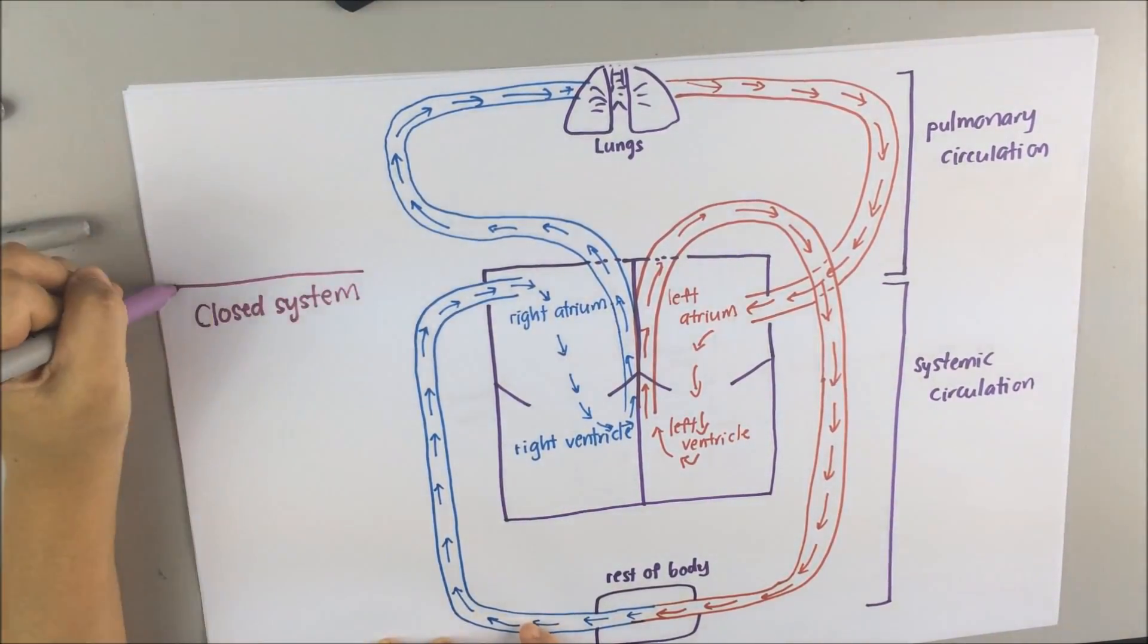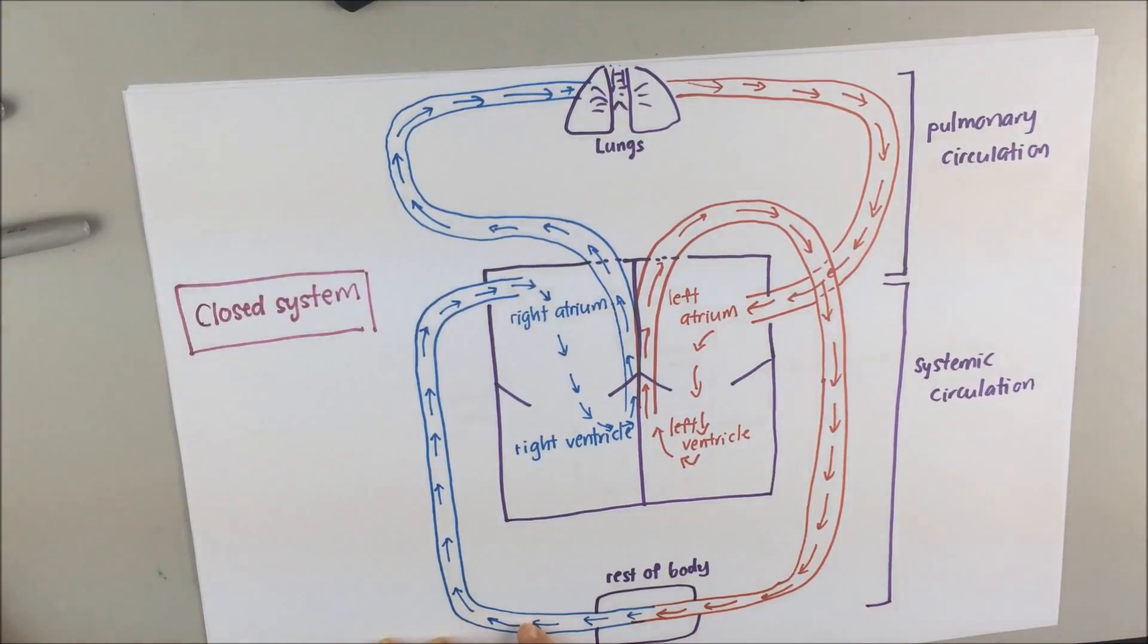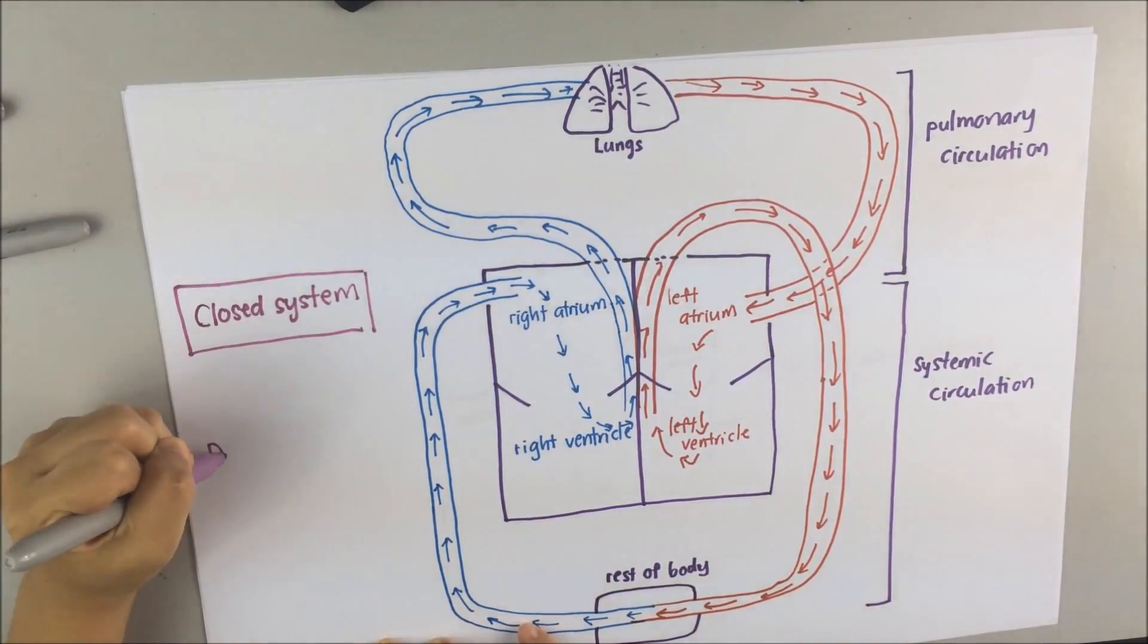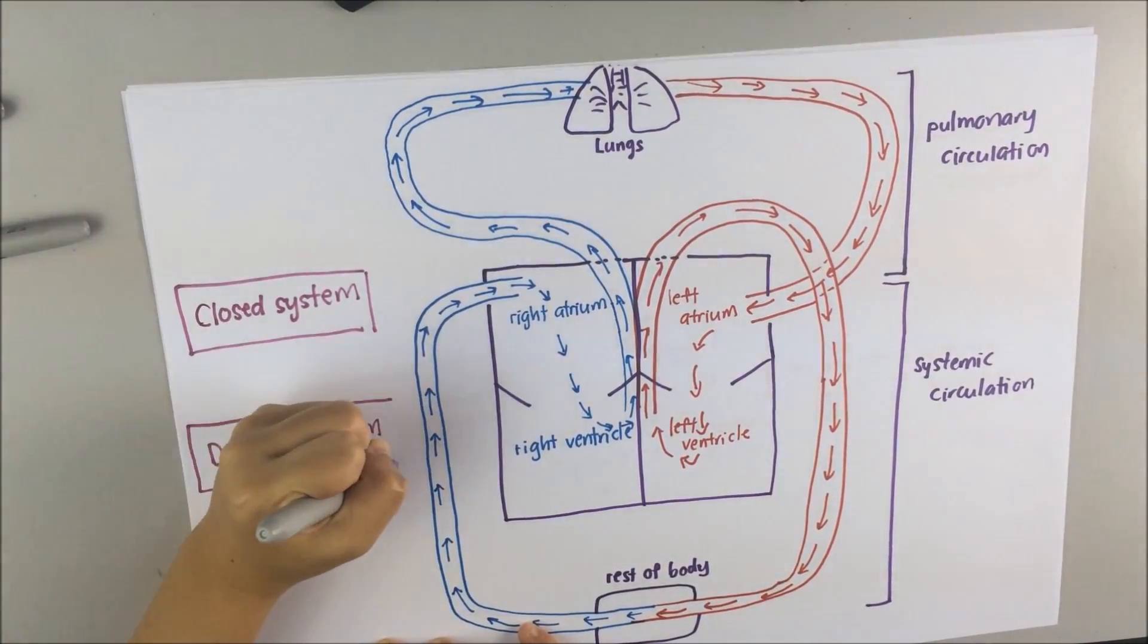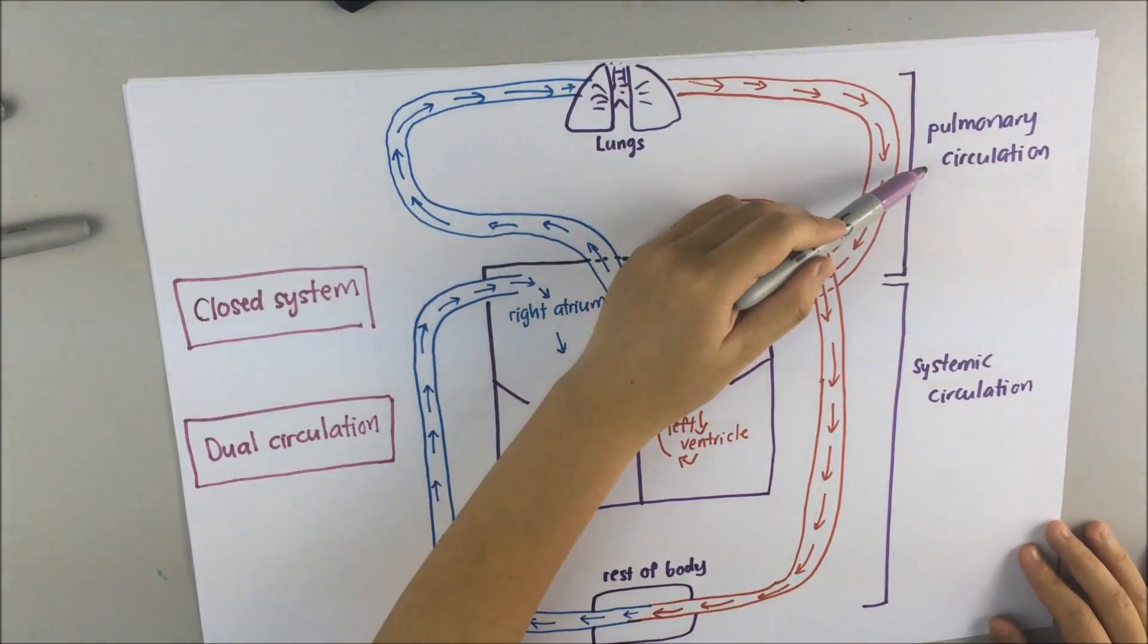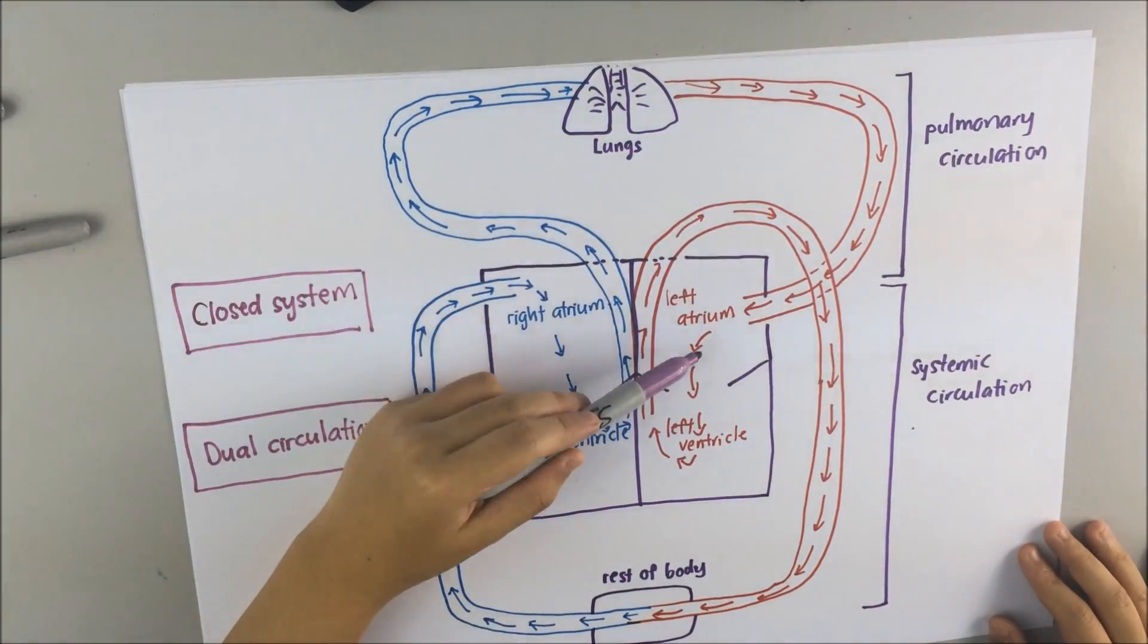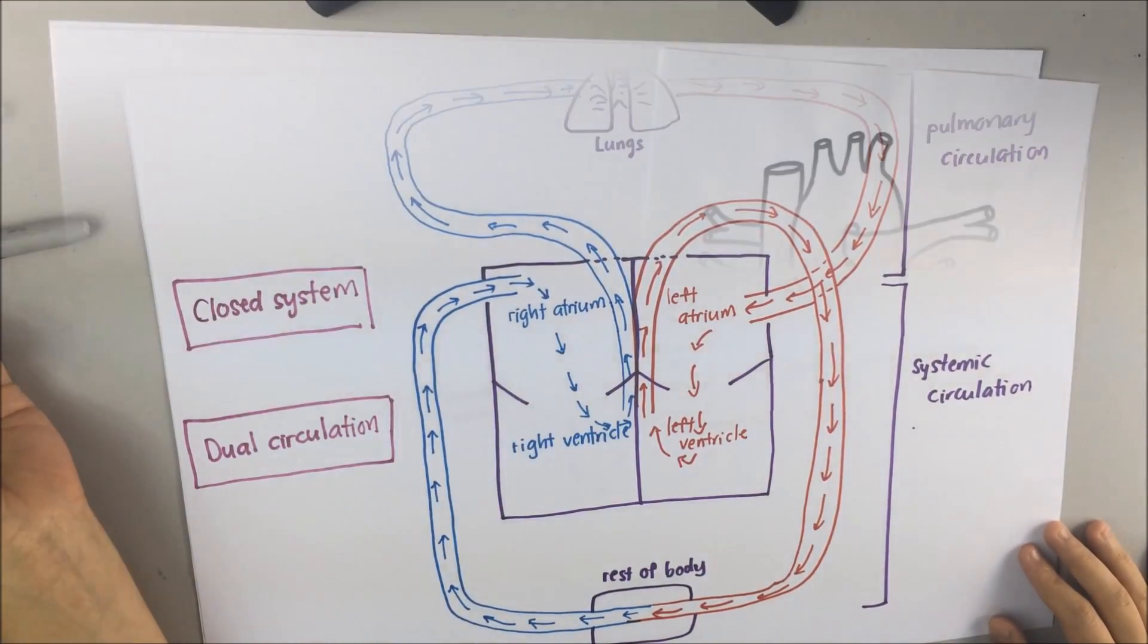Our circulation system is also known as closed system, which means that the blood flows only within the heart and blood vessels. So remember, closed system and dual circulation, which consists of pulmonary circulation, systemic circulation which are connected at the heart.